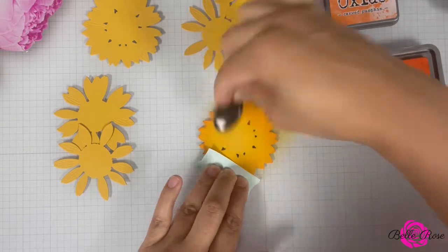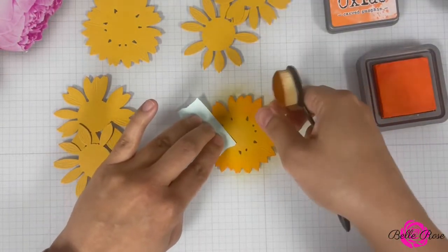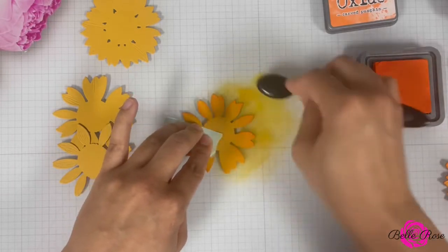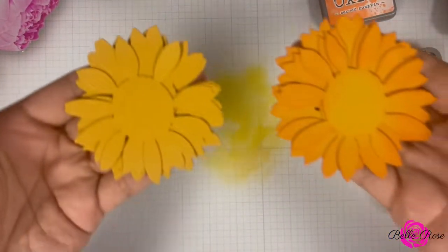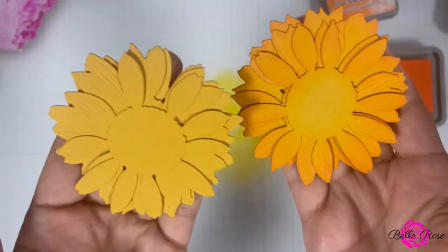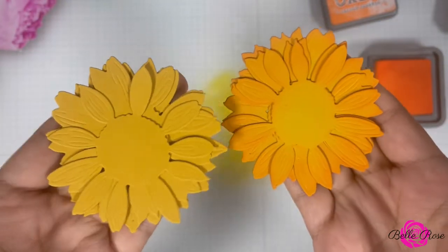And then there are sometimes, like with the coffee cup, I'll just add a gray or brown. I'll just add one color to the cardstock. It just depends on my vision for my project. And as you see right here, here is a side-by-side comparison of the sunflower with and without the oxide blend.